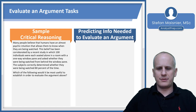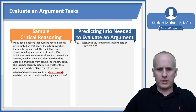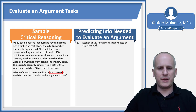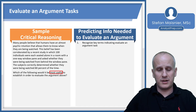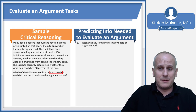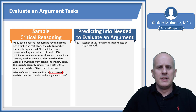Let's take a look at an example. As always, we read the question stem first and recognize key terms indicating an evaluate argument task. The question reads: 'Which of the following would it be most useful to establish in order to evaluate the argument above?' We see the word 'evaluate,' and 'useful' also indicates we need something to help understand what's happening.